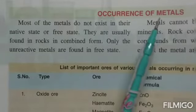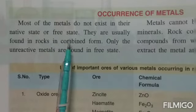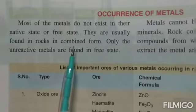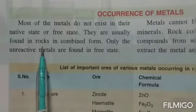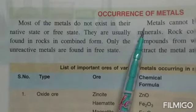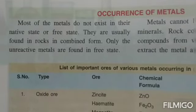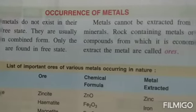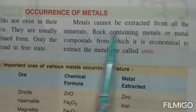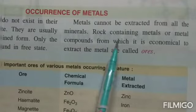Moving on to the occurrence of metals: most metals do not exist in a native or free state — they are usually found in rocks in combined forms. These metals are taken out from below the surface of the Earth, embedded in rocks, and the rock that contains a lot of metal is known as the ore of that metal. Only the unreactive metals are found in a free state; highly reactive metals always combine with nearby minerals. Metals cannot be extracted from all minerals and rocks.